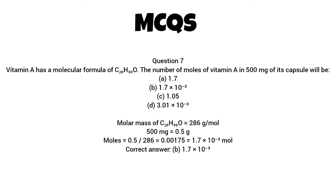Question 7. Vitamin A has a molecular formula of C20H30O. The number of moles of vitamin A in 500 mg of its capsule will be. Molar mass of C20H30O is almost equal to 286 grams per mole. 500 mg equals 0.5G. Correct answer B. 1.7 times 10 to the minus 3.